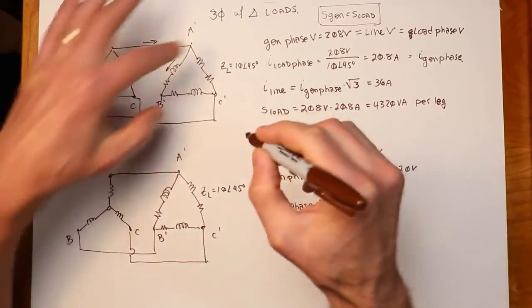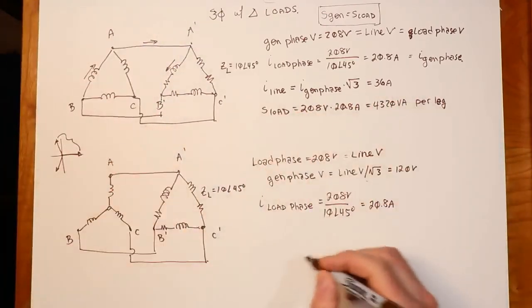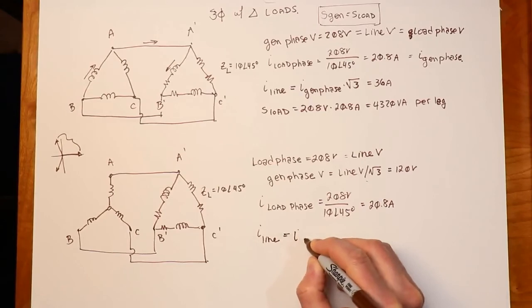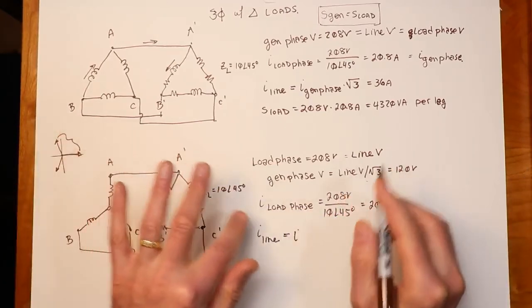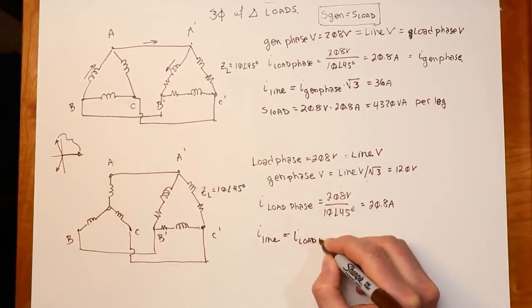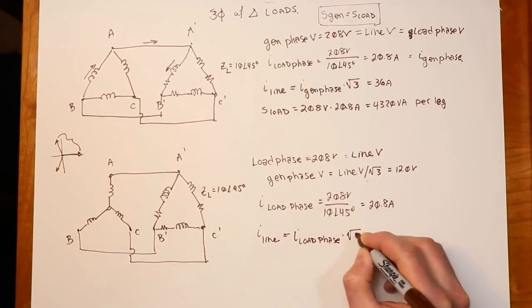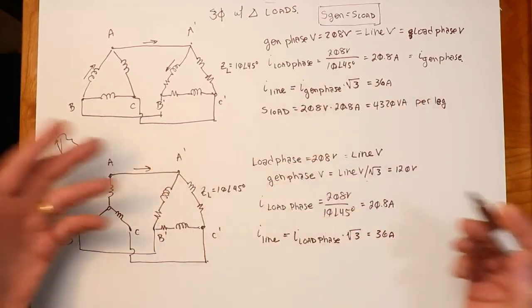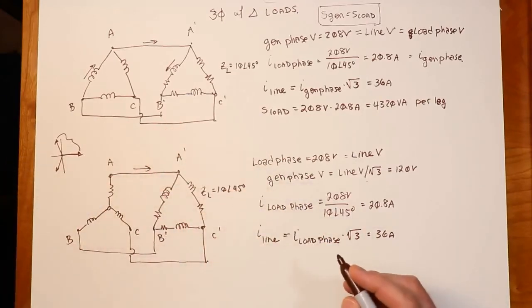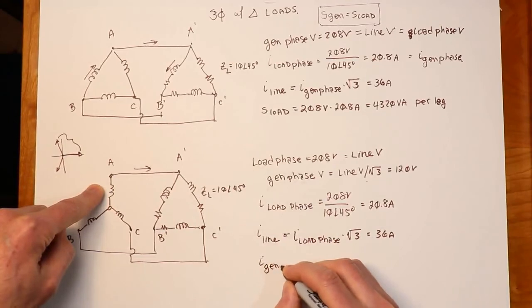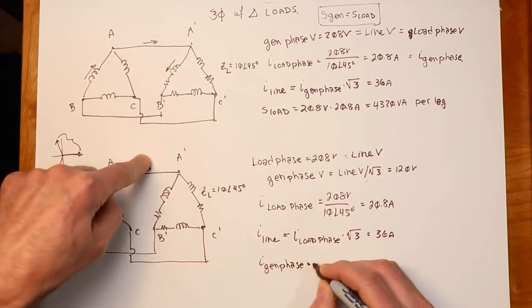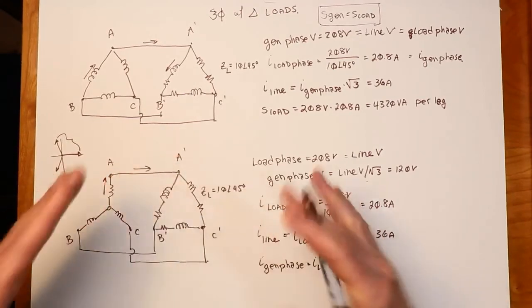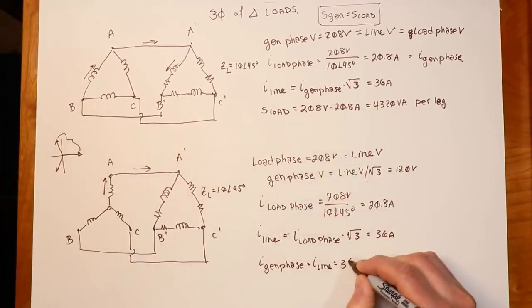Now, given that, I can sort of reuse my calculation here for the line current. In other words, it's going to be the load phase times the square root of 3, which is the 36 amps. Same situation we had over here. So you just think, I got 36 amps. Well, now it's pretty easy what I just said a moment ago. The generator phase has to equal, in this case, whatever the line is. Because it's just a direct connection. This is this. There's no splitting, there's no combining. So that has to equal 36 amps.